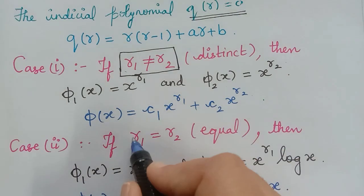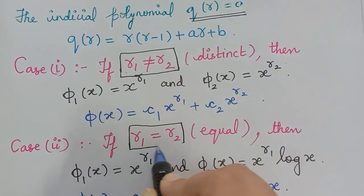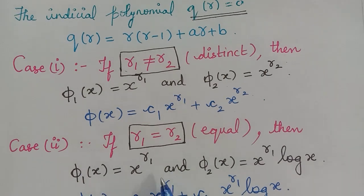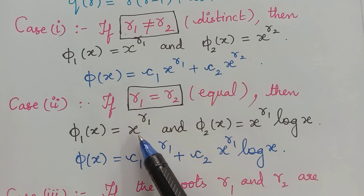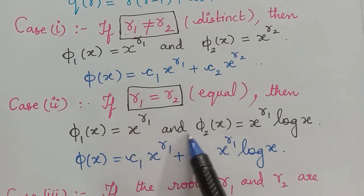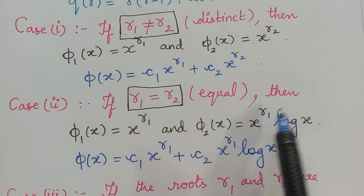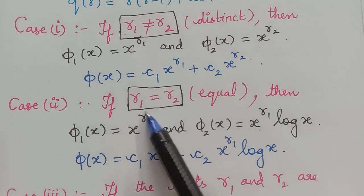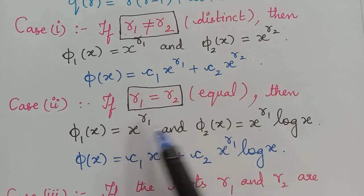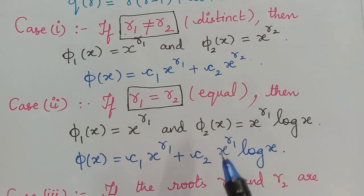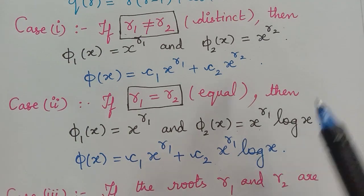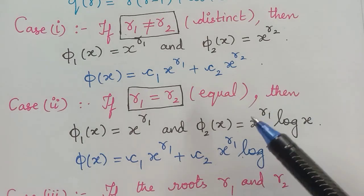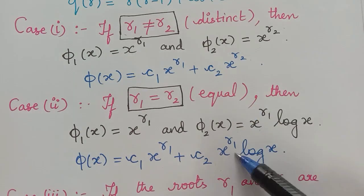In another case, when r1 is equal to r2, that is when the two roots are equal, the solutions are given by phi 1 of x equal to x power r1 and phi 2 of x equal to x power r1 log x. The general solution will be phi of x equals c1 x power r1 plus c2 x power r1 log x. These two we have already proved in a theorem.